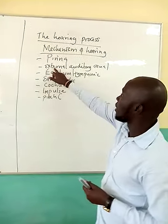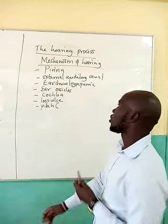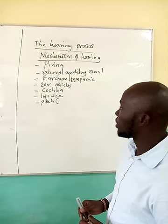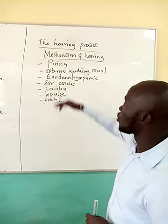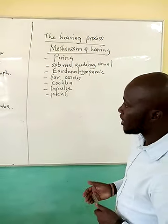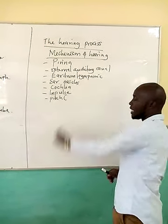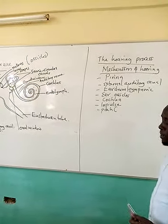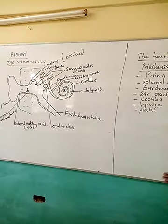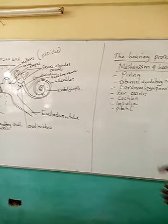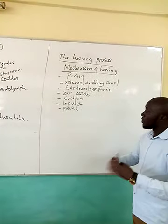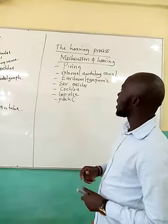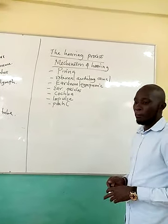The sound waves that are directed to the external auditory canal are then transmitted to another part of the ear — what we call the eardrum, also given the name tympanic membrane. The tympanic membrane plays a vital role: these sounds are further changed into vibrations, after which they are directed to the next part.